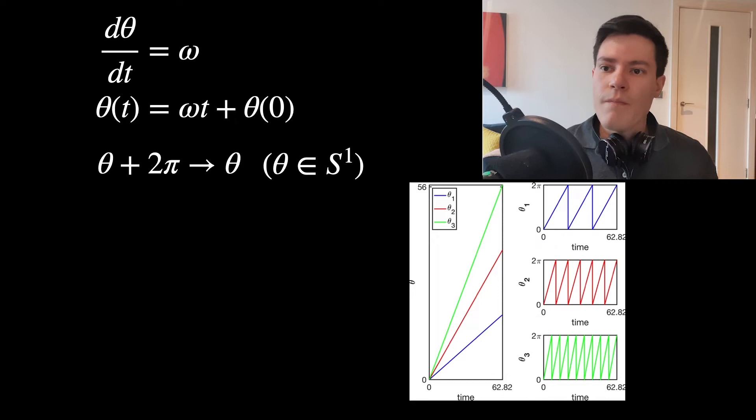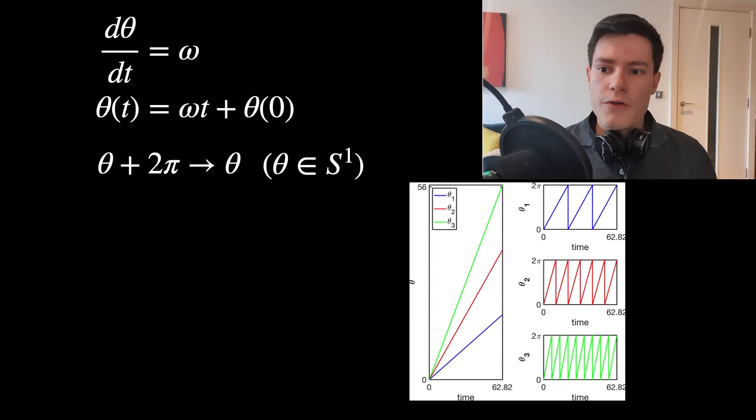It's more useful to think about these things as being periodic, and really the angle is repeated with two pi around a circle. The way this is usually represented is just to say that theta plus two pi is actually equal to theta.